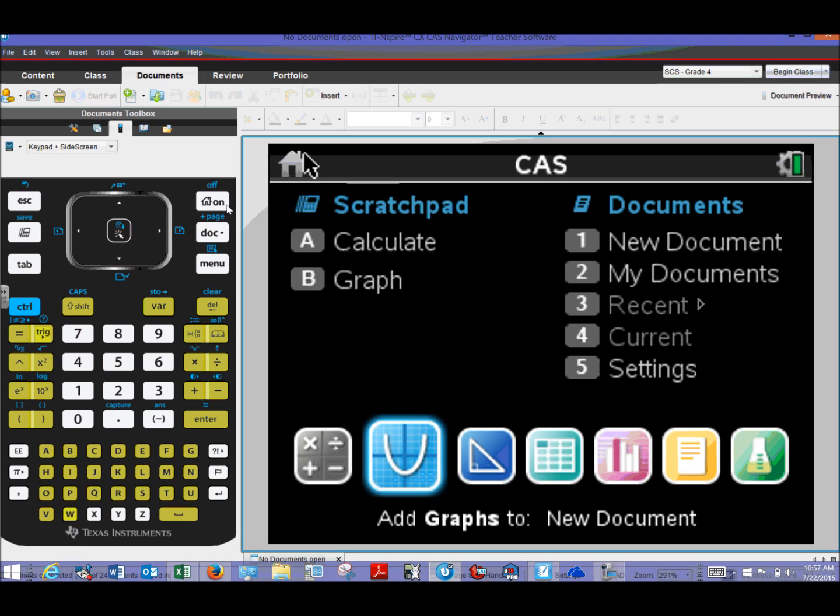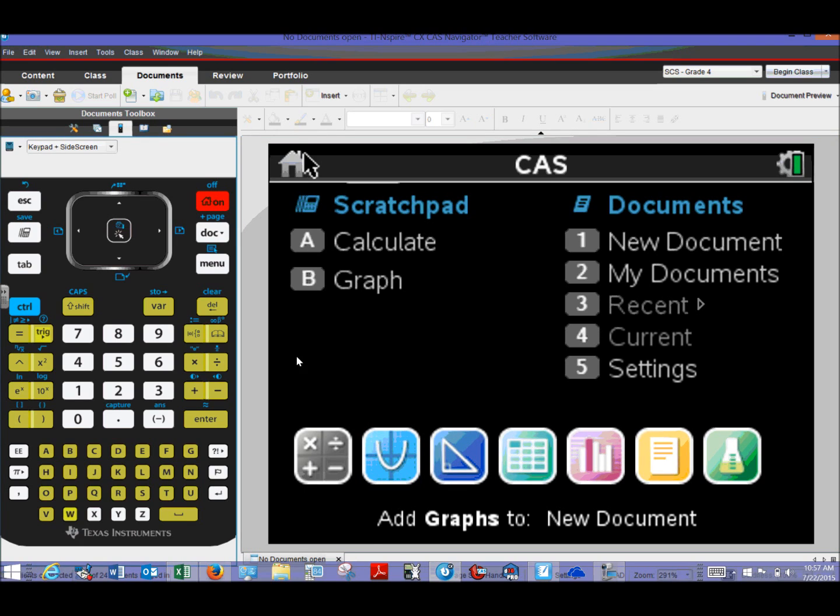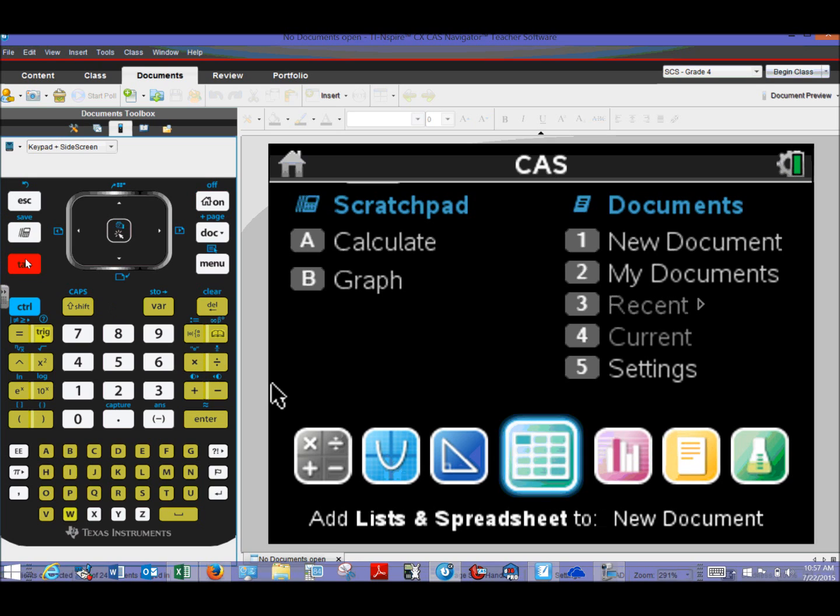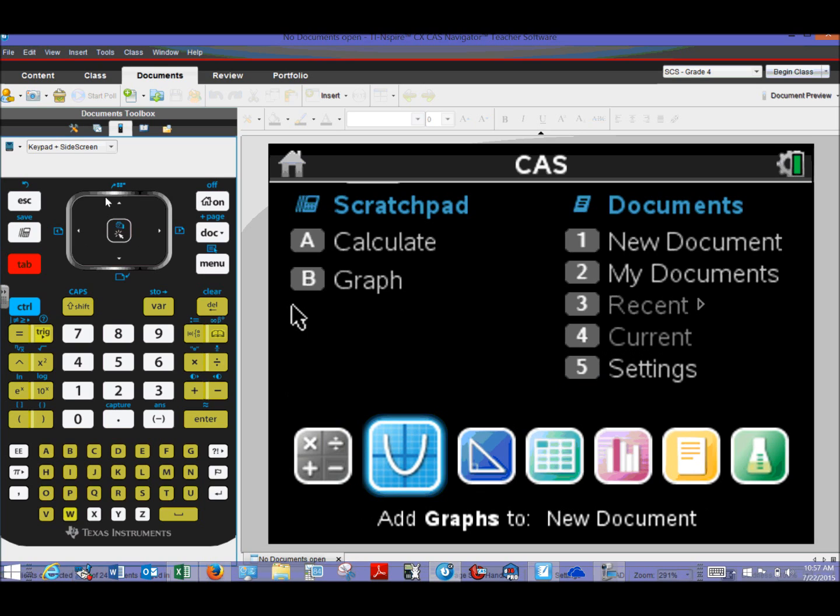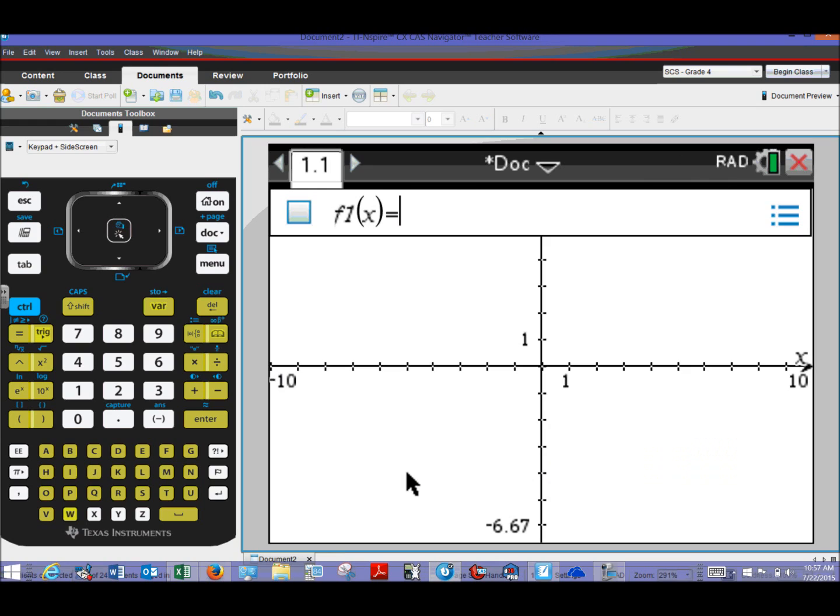The big difference is, I want us to use a document, I don't want to use a scratch pad. So what you want to do is make sure that you're in the home screen. And then let's go ahead and choose, we can either choose a new document and then choose a graph, or we can just grab this nice little handy icon down here, click on that. You can get to that by hitting Tab several times.